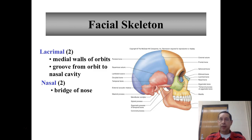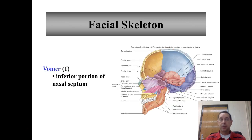Two nasal bones connected by the nasal suture form the bridge of your nose — really the only part of the nose that's actually bone and not cartilage. The vomer forms the inferior portion of the nasal septum, the structure that splits the nasal cavity into left and right sections, though most of the septum is cartilage, just like most of the nose is cartilage.